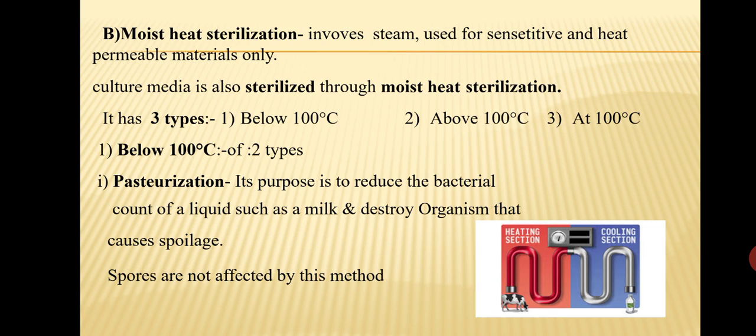Moist heat sterilization involves steam and is used for sensitive and heat-permeable materials. Culture media are also sterilized through moist heat sterilization, which is the most common and effective method. It has three subtypes: below 100°C, at 100°C, and above 100°C.